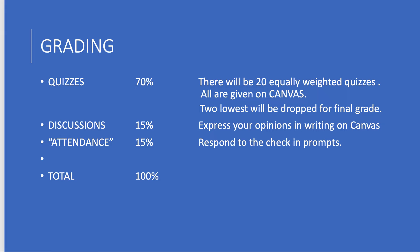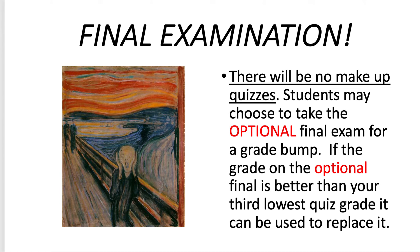Discussions are 15% — you'll express your opinions in writing on Canvas; the prompts will be posted there, they will be graded, and you'll get plenty of information in advance. Attendance is 15%, gauged by responding to check-in prompts. Since we don't have a physical class to attend, I want to make sure you're with me all semester. Check-ins will come via Canvas announcements — I might ask you a question about the art covered that week. That totals 100%.